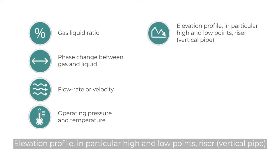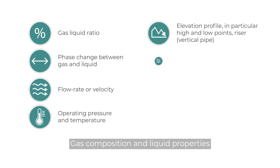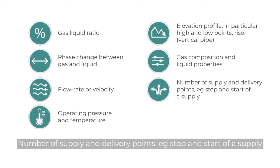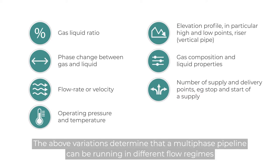Gas-liquid ratio, phase change between gas and liquid, flow rate or velocity, operating pressure and temperature, elevation profile, in particular high and low points and risers, gas composition and liquid properties, and number of supply and delivery points. The above variations determine that a multi-phase pipeline can be running in different flow regimes.